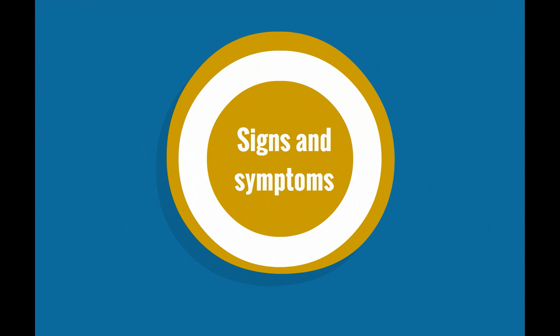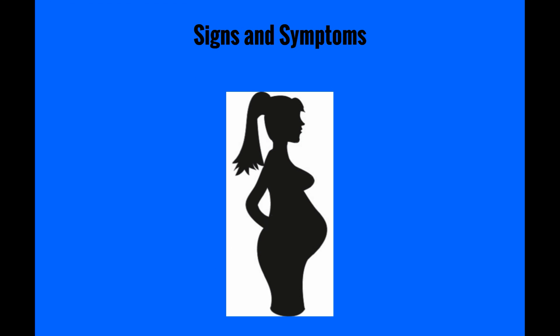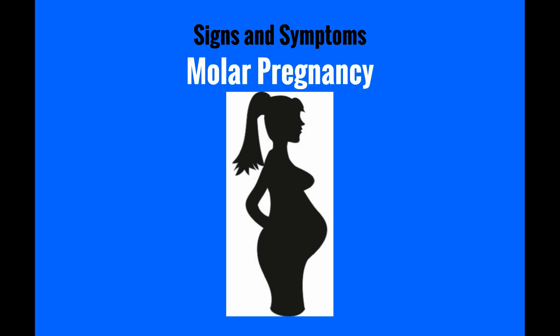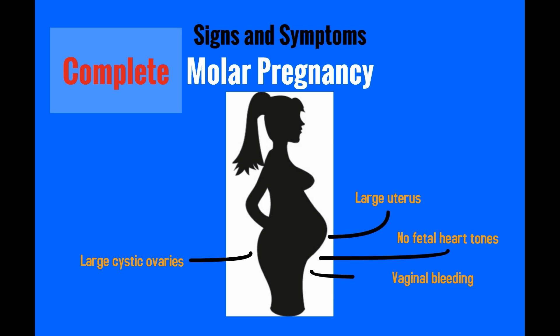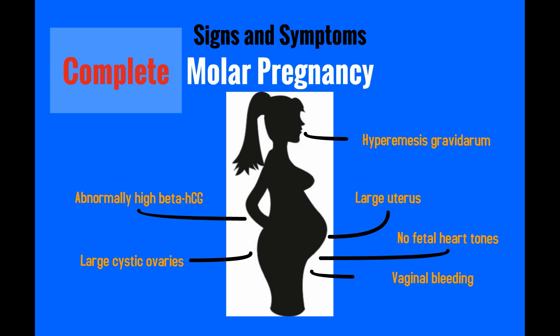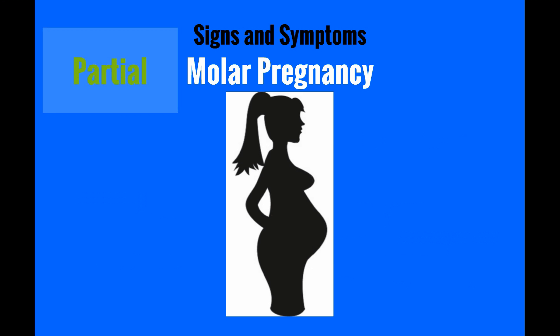The most common symptom of a molar pregnancy is abnormal vaginal bleeding. For a complete molar pregnancy, signs and symptoms can include uterine enlargement greater than expected for gestational age, absent fetal heart tones, cystic enlargement of the ovaries, hyperemesis gravidarum, and an abnormally high level of HCG for gestational age. For a partial molar pregnancy, the signs and symptoms are often similar to miscarriage, with vaginal bleeding and absent fetal heart tones.